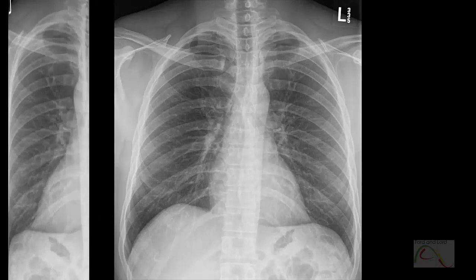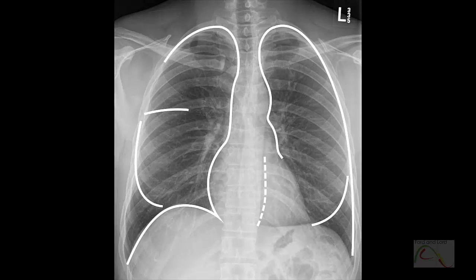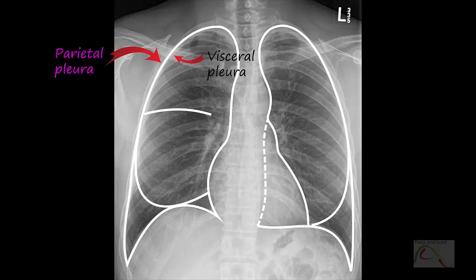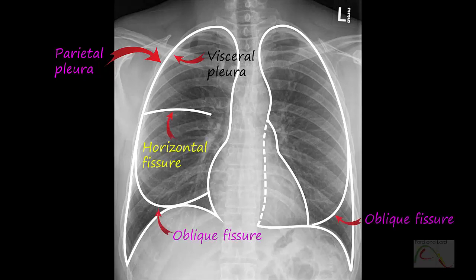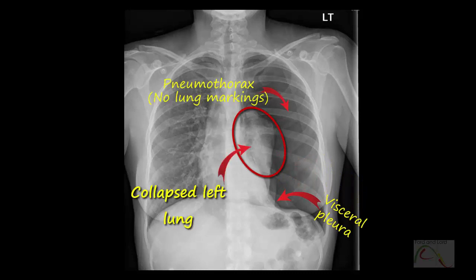Each lung is covered by a double-layered membrane called the pleura. The cavity between the two layers is known as the pleural cavity. The outermost layer is attached to the thoracic wall, mediastinum, and diaphragm, and is known as the parietal pleura. The inner layer, the visceral pleura, is attached to the lungs and extends into the fissures. Mesothelial cells produce and secrete pleural fluid into the pleural cavity, which acts as a lubricant. The pleura is so thin that its outline is not visible on a normal chest x-ray. However, in certain conditions — for example, when a patient has a pneumothorax — the visceral pleura is visible. The left lung is collapsed, creating a sharp outline against the air in the pleural cavity.